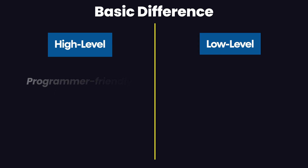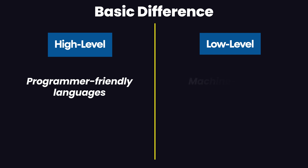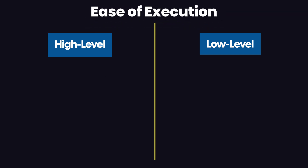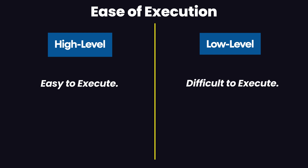High level languages are programmer-friendly languages — manageable, easy to understand, easy to debug, and widely used today. Low level languages, on the other hand, are machine-friendly languages that are very difficult for a human being to understand, but very easy for machines to interpret. In terms of ease of execution, high level languages are very easy to execute, while low level languages are very difficult to execute.